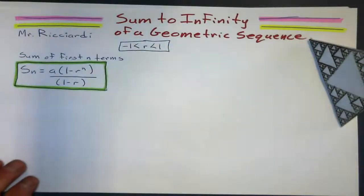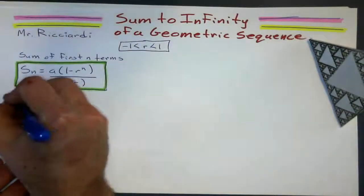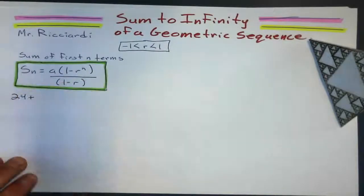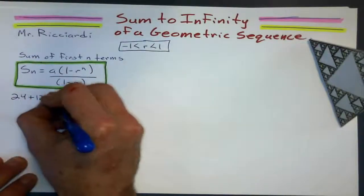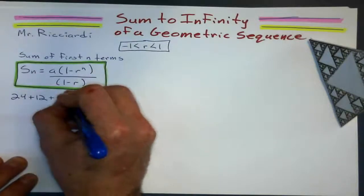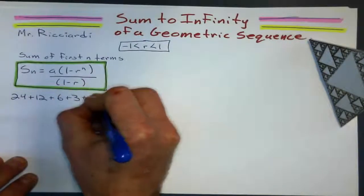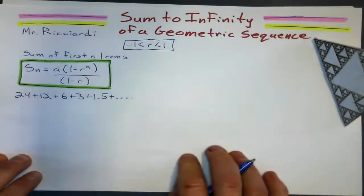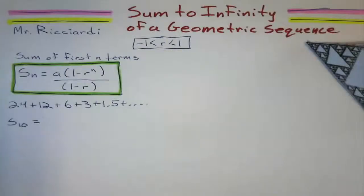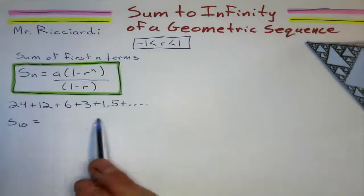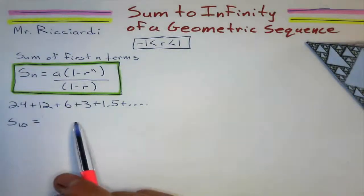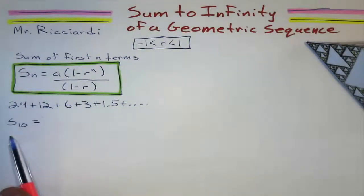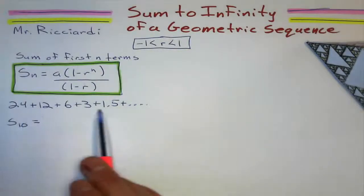Suppose I give you a series, and I say, let's find the sum of the first several terms of this series. 6 plus 3 plus 1.5 plus dot dot dot. If I have this series, and I say, I'm not concerned about sum to infinity, but I'm just concerned about the first 10 terms of this sequence.